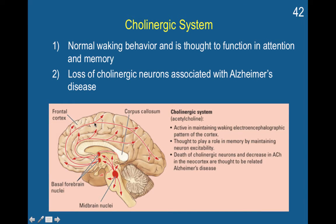These pathways pass through the frontal cortex, which is highly involved in goal-directed behavior, and back to the parietal lobes, involved in attention and spatial reasoning. The frontal lobes exert top-down, goal-directed influence on attention. The cholinergic system is active in maintaining waking EEG patterns in the cortex — patterns of neural activity present when an individual is awake. It also plays a role in memory by maintaining neuron excitability, and the death of cholinergic neurons and decrease in acetylcholine in the neocortex is linked to Alzheimer's disease.